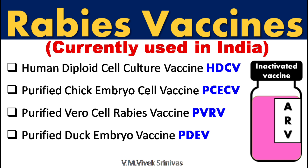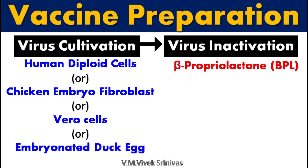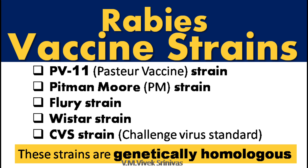In India, where rabies is endemic, 4 types of rabies vaccines are available. The first 3 are cell culture derived: (1) Human Diploid Cell Culture Vaccine, (2) Purified Chick Embryo Cell Vaccine, (3) Purified Vero Cell Rabies Vaccine. The 4th is the Purified Duck Embryo Vaccine. In these vaccines, the virus is cultivated in the respective cells or embryonated duck egg, followed by inactivation using beta-propriolactone. Vaccine strains include PV11, Pittman-Mohr, Flurry, Wistar and CVS strains, which molecular studies have shown to be genetically homologous.